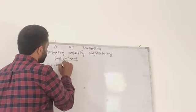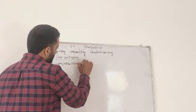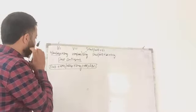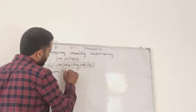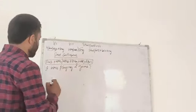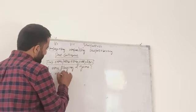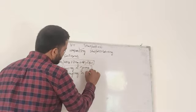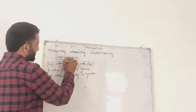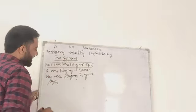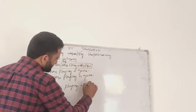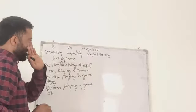Past continuous affirmative structure: Subject plus was/were plus verb in -ing form (fourth form of verb) plus object plus remaining part of sentence. For example: I was playing a game. Was agrees with 'I'; were agrees with 'we.' We were playing a game. You were playing a game. They were playing a game. He was playing a game. She was playing a game.